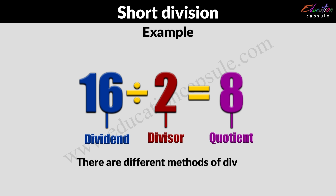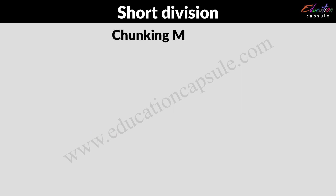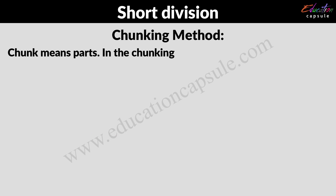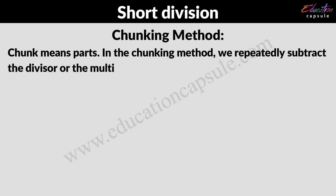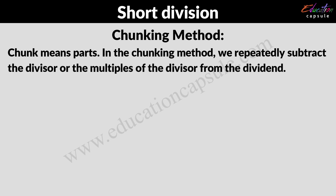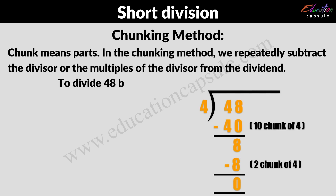Here we have different methods of division. The first one is the chunking method. Chunk means parts. In the chunking method, we repeatedly subtract the divisor or the multiples of the divisor from the dividend. For example, to divide 48 by 4, we can subtract chunks of 4.